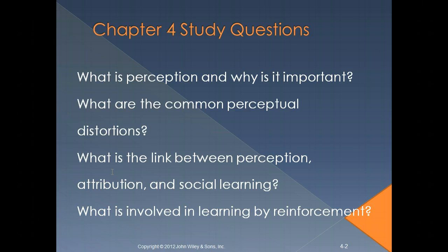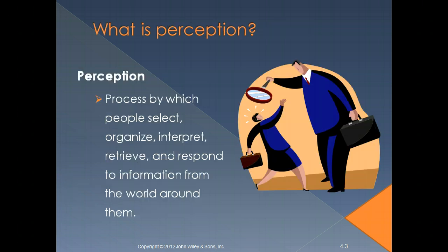We need to look at and understand perception: what are some common problems with perception that people can develop, and how can we overcome that? And the links between perception, social learning, and attribution. We'll also look at what's involved in learning in regards to reinforcement. These are the things we're going to talk about in this chapter.